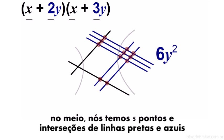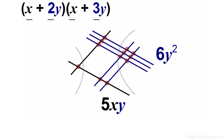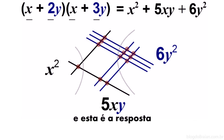In the middle, we have five dots, and these are the intersections of a black and blue line, which means it will be an x and a y. On the end, we just have one dot, and that's for two black lines, so it's x squared. So that's the answer.